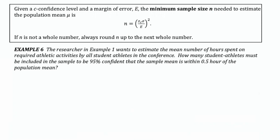The minimum sample size formula is actually just a rewriting of the margin of error formula, solved for n. If n is not a whole number, we always round it up to the next whole number. In this last example, the researcher wants to estimate the mean number of hours spent on required athletic activities. How many student athletes do they need in the sample to be 95% confident that the sample mean is within half an hour of the population mean? We're setting targets we want to achieve, and this tells us how big our sample has to be.